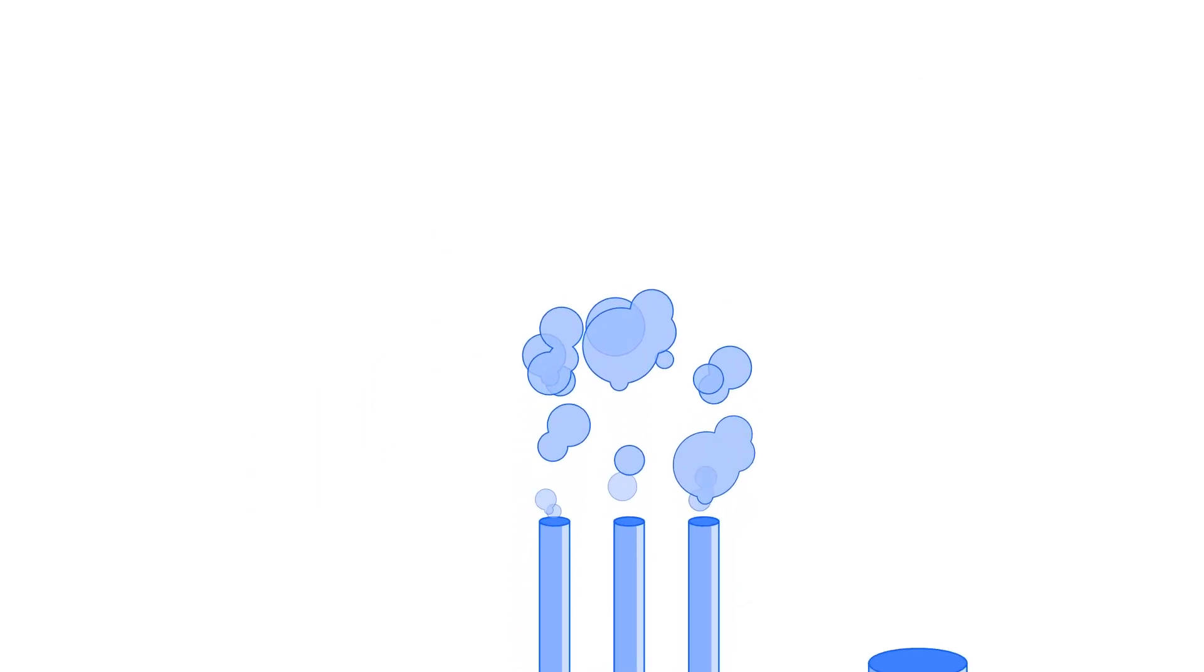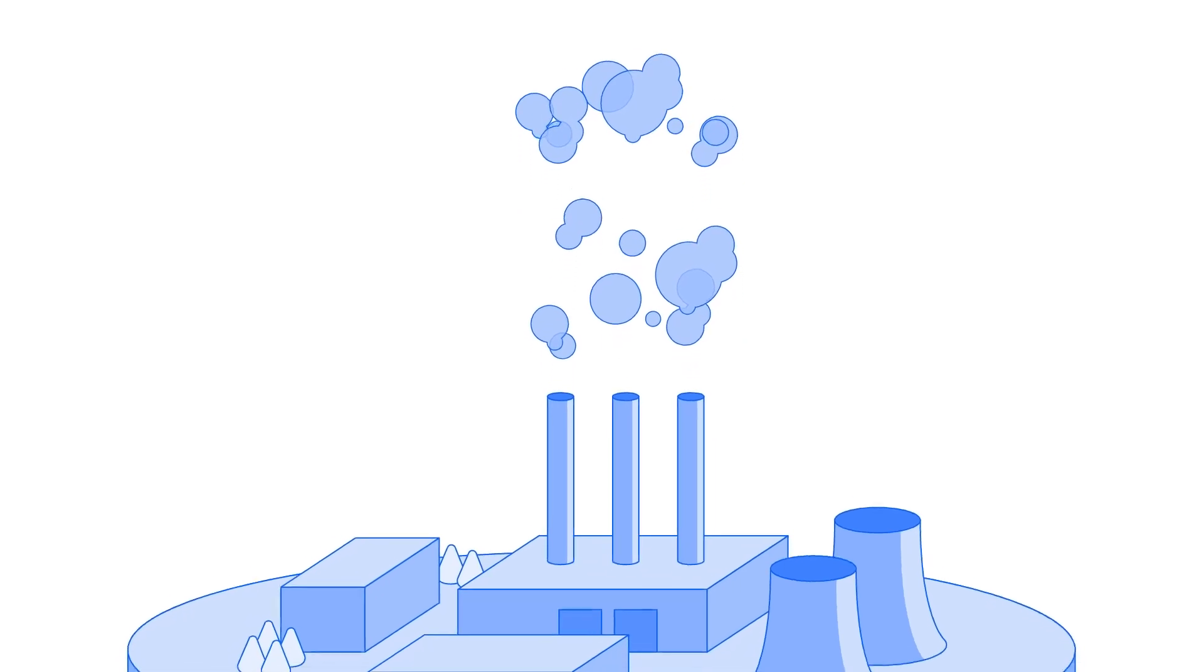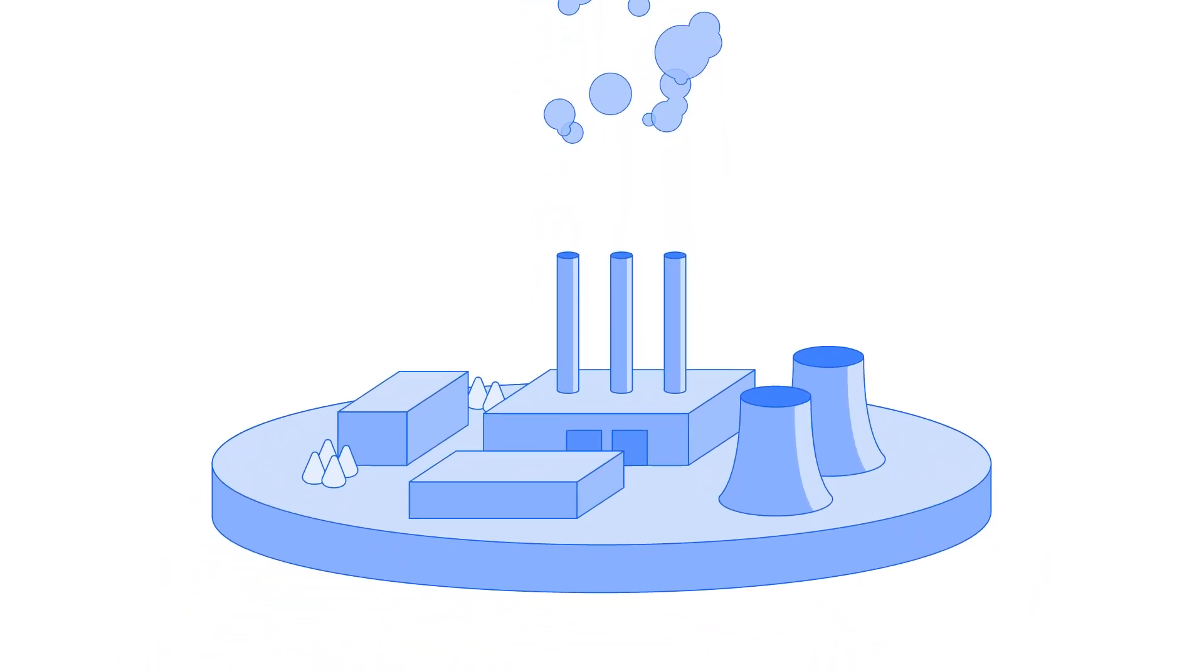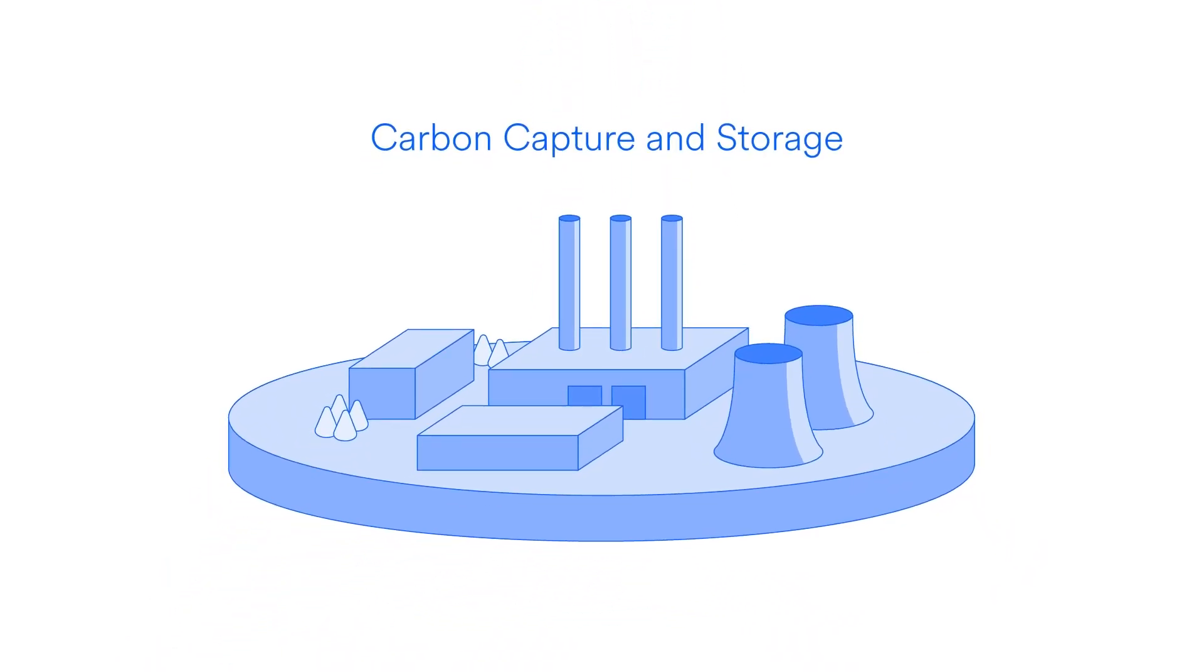The main method for managing CO2 emissions from large industrial sources is an emissions abatement technology called carbon capture and storage. CCS is said to play a key role in the path to net zero emissions.